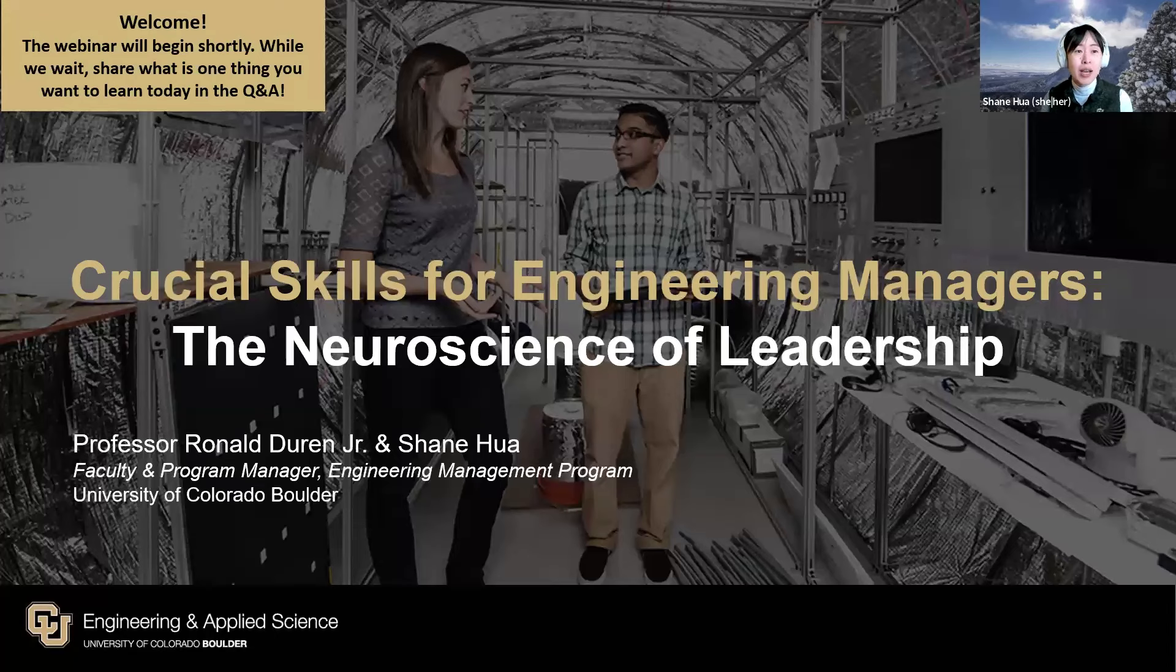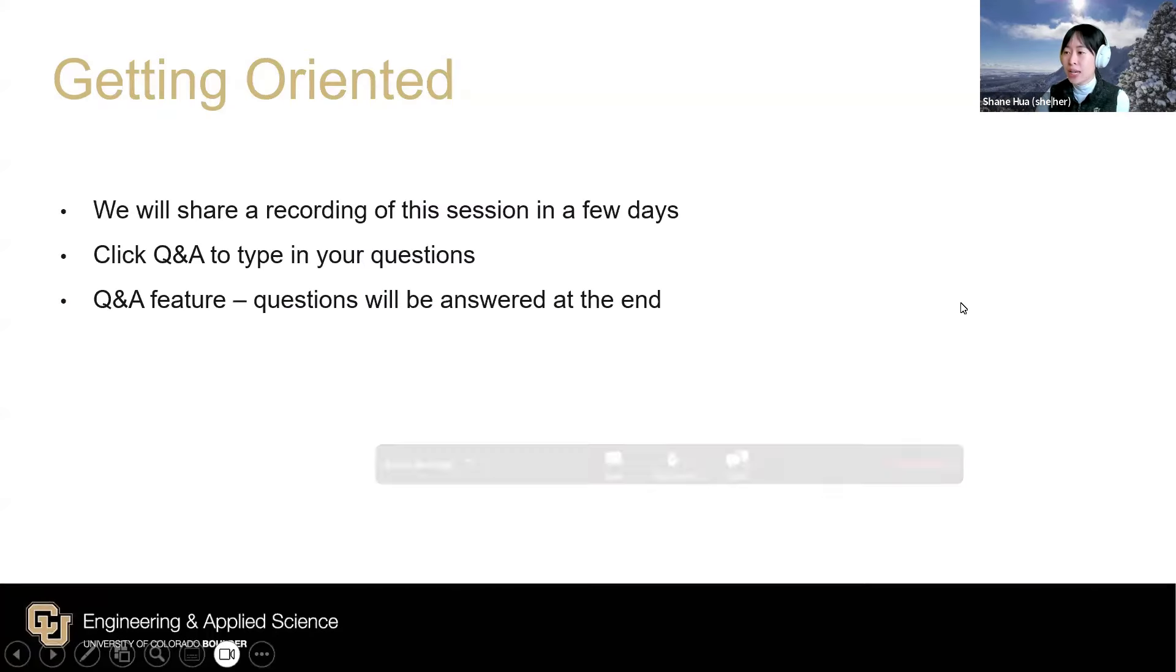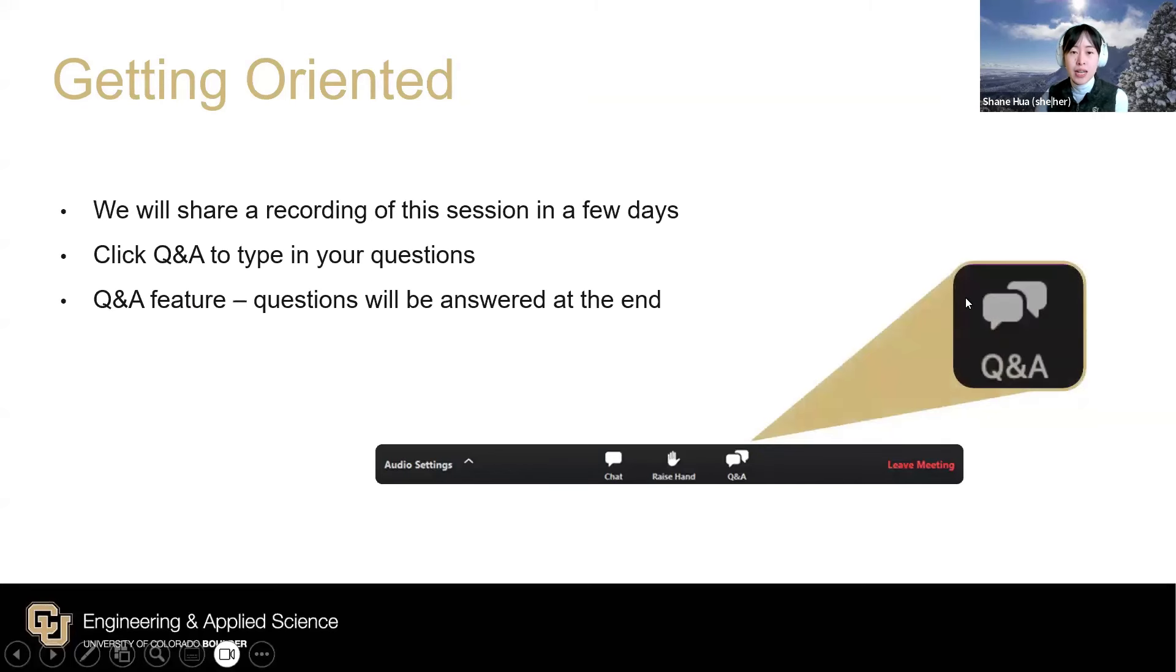So as we wait, go ahead and click on the Q&A icon and put in what is something that you want to learn today. What is that one thing that you want to take away from the webinar today? If you don't know where the Q&A icon is, it is located at the bottom of Zoom. There's an icon right next to the chat that says Q&A.